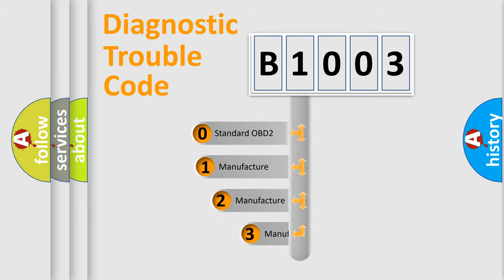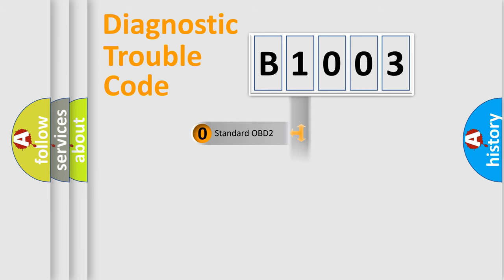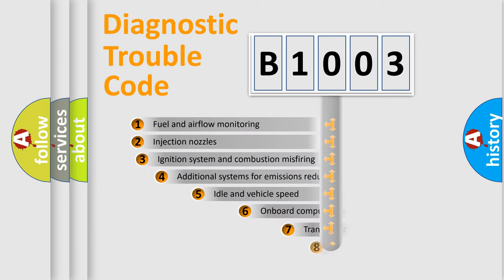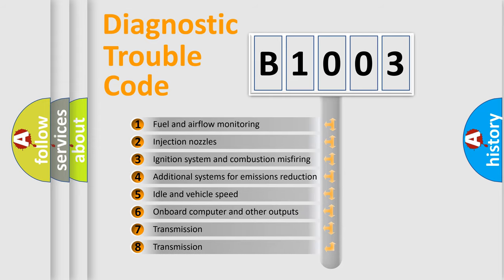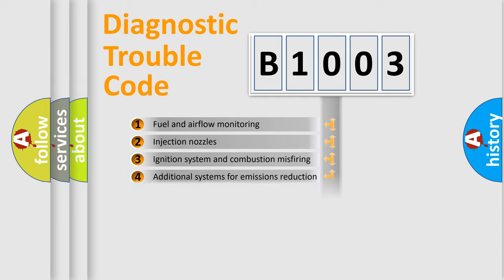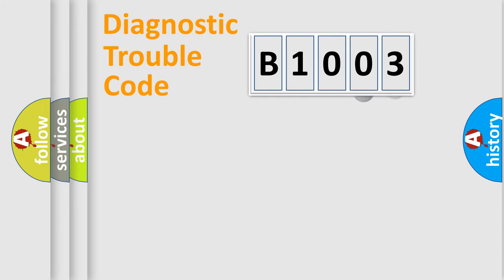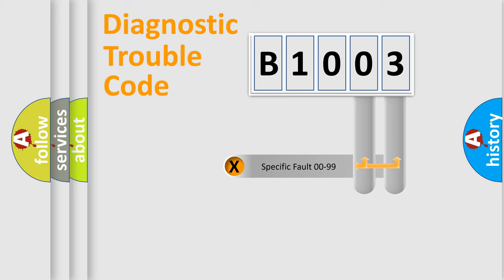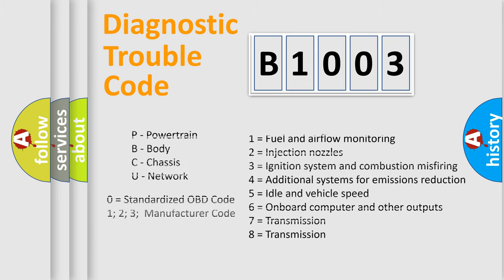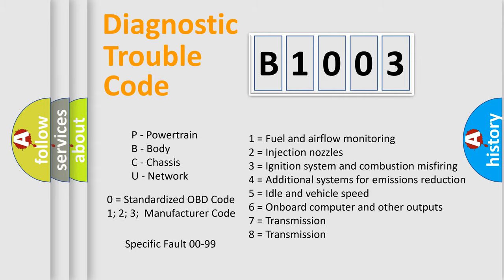If the second character is expressed as zero, it is a standardized error. In the case of numbers 1, 2, or 3, it is a more specific expression of a car-specific error. The third character specifies a subset of errors. This division is valid only for the standardized DTC code. Only the last two characters define the specific fault of the group, and this division applies only when the second character is zero.